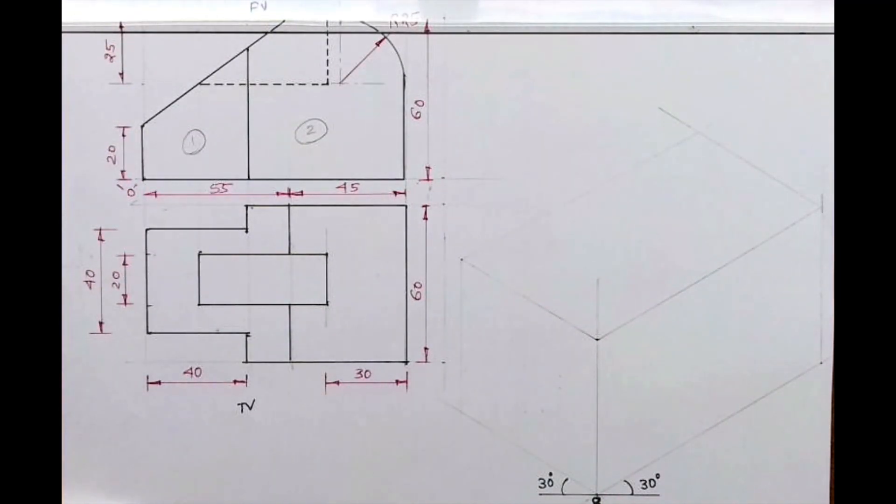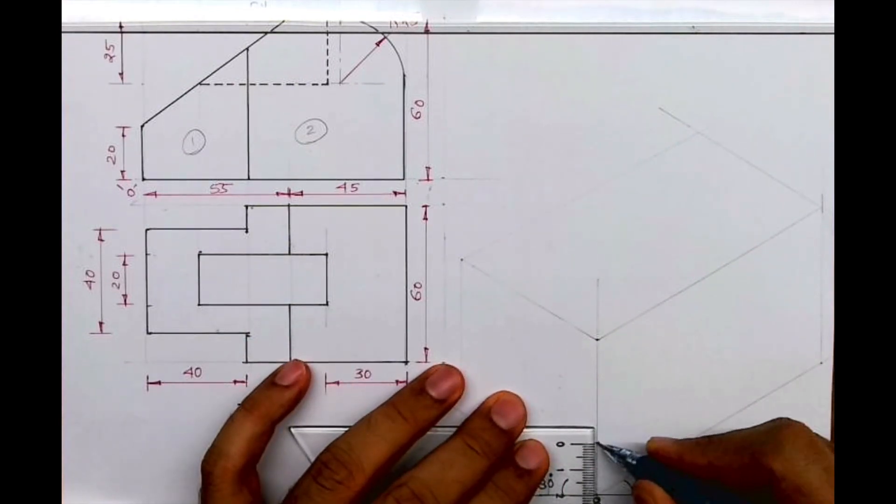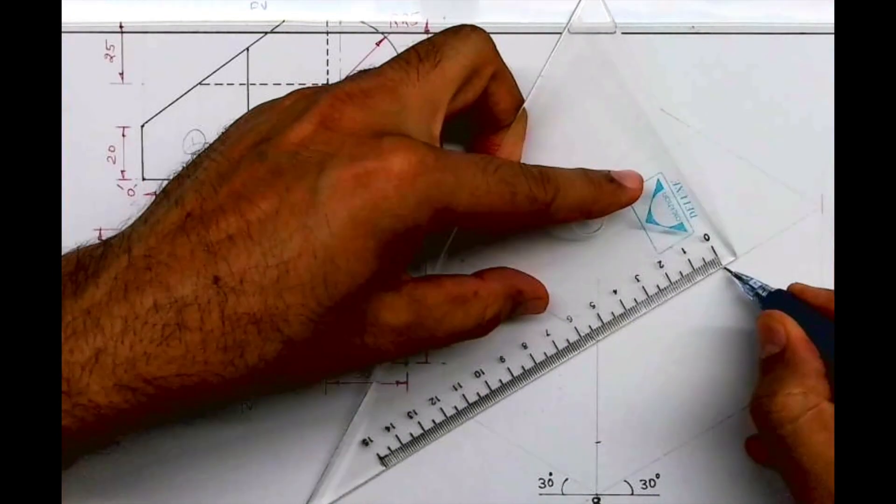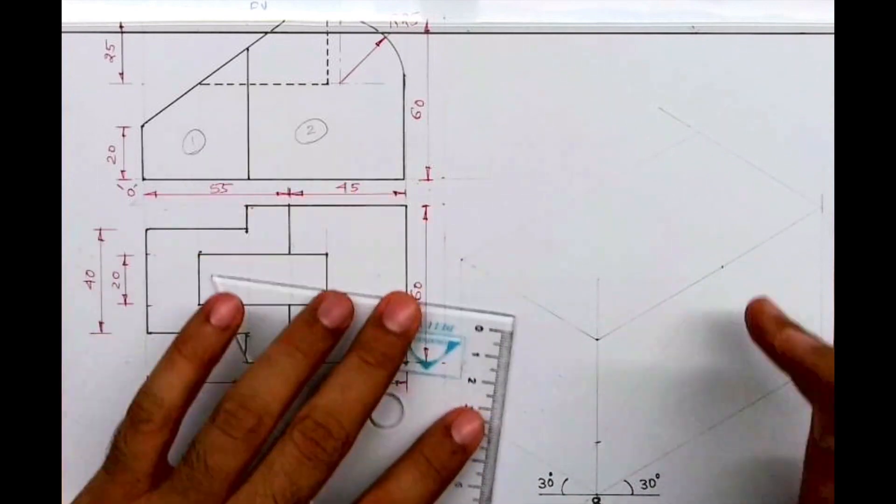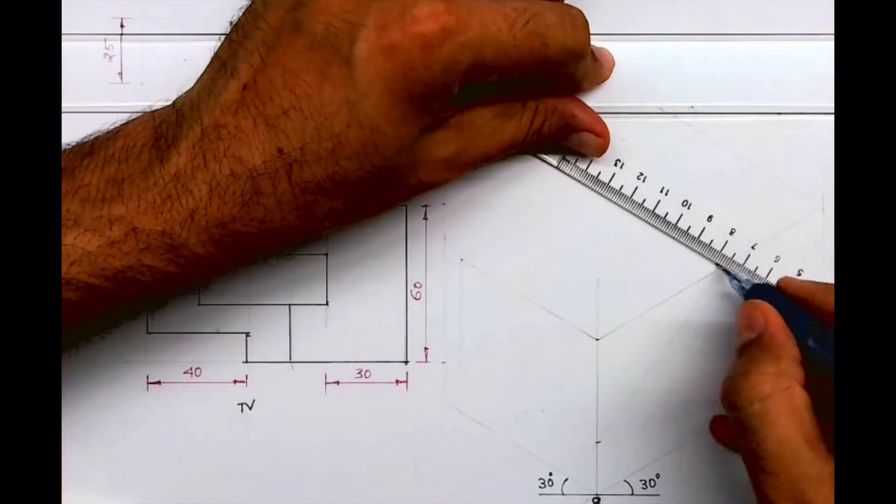What we do is draw the entire unit as one. So I will take 20 from here, and this is 45, so from here I can take 55 and draw the slope. Now whatever is there in the front, the same thing is behind. So with that concept I can take this line 60 behind.